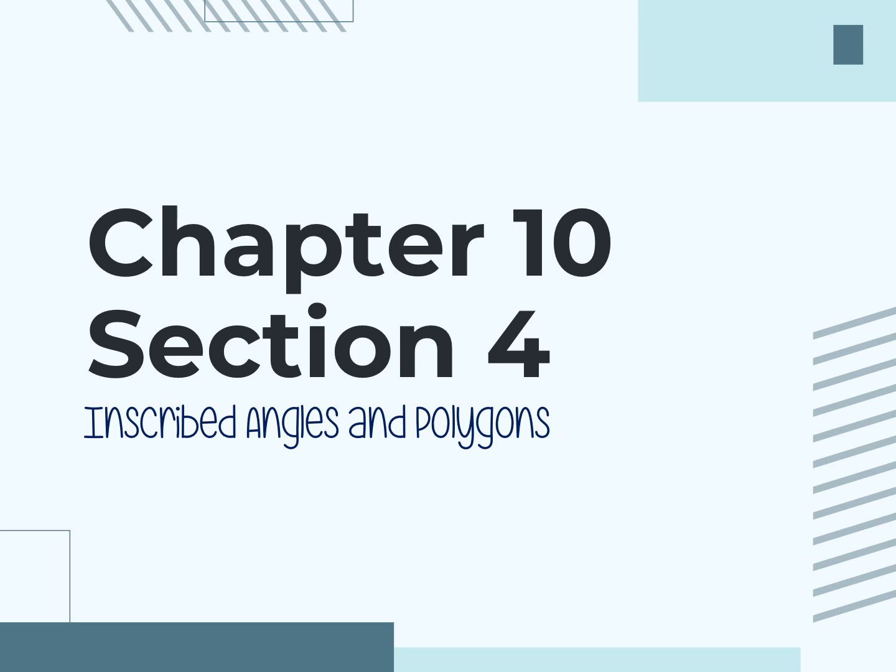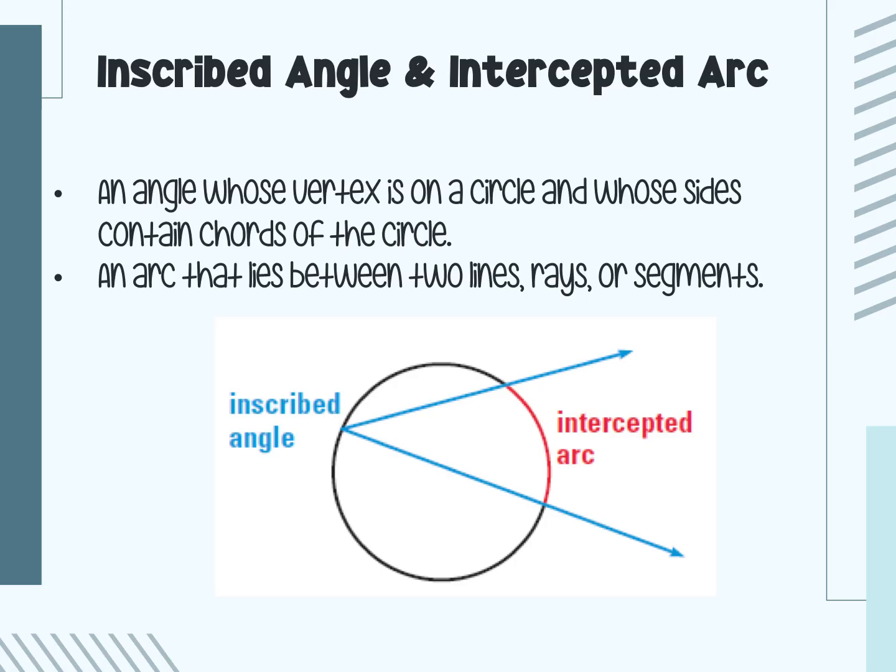So chapter 10, section 4. Today we're going to learn about inscribed angles and polygons. The first thing we're going to do is define what an inscribed angle and what an intercepted arc is. An inscribed angle is an angle whose vertex is on a circle and whose sides contain cords of the circle.